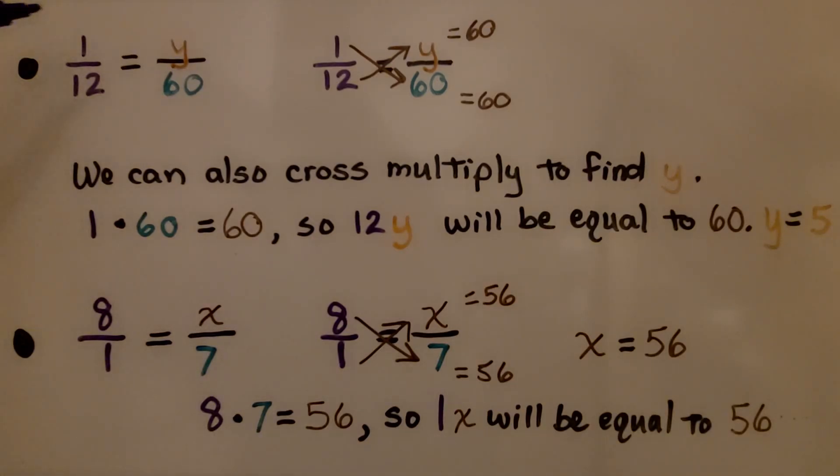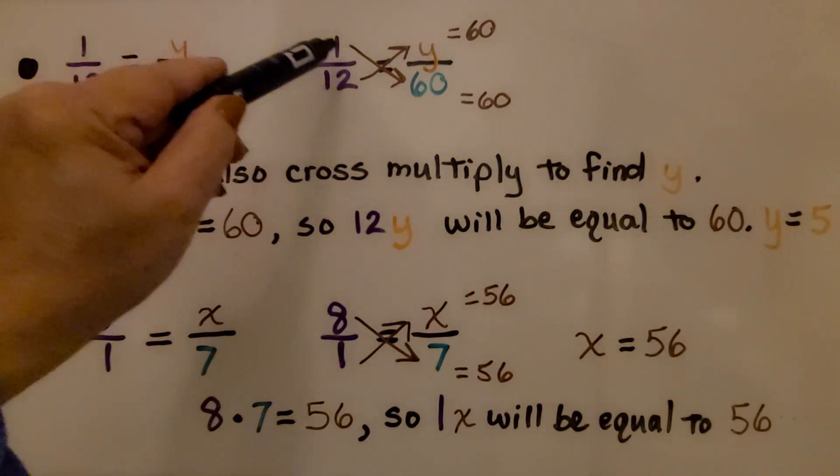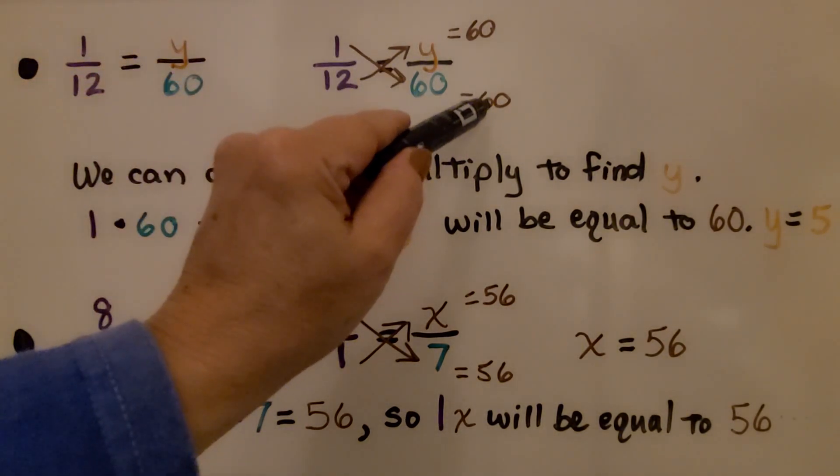Our proportional relationship was 1 to 12 is equal to y to 60. We can also cross-multiply to find y. We do 1 times 60, which is equal to 60.